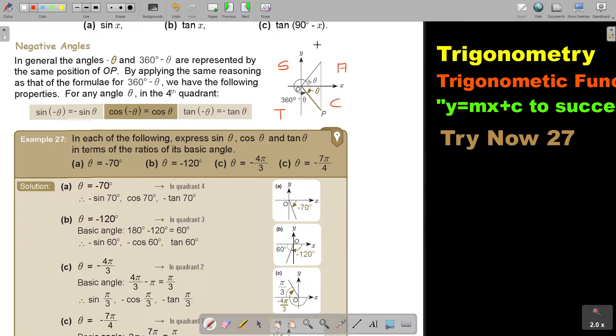Let's look at an example. In each of the following, express sin theta, cos theta, and tan theta in terms of the ratios of the basic angle. So theta is negative 70. If it's negative 70, it's here. So it's going to be negative sin 70, negative tan 70, but positive cos 70, due to the fact that the only one positive is cos.